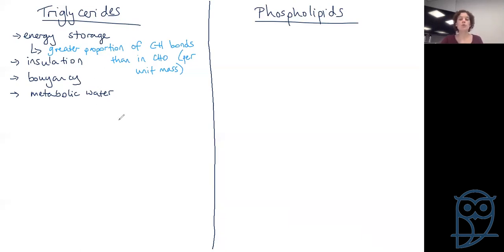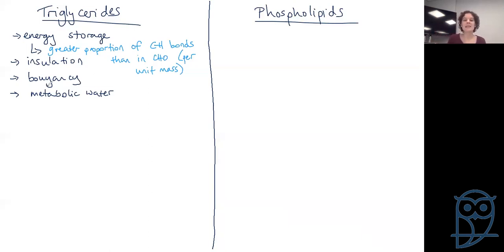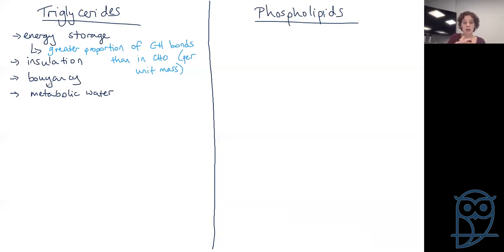Insulation, buoyancy, and metabolic water are all functions of triglycerides. For homeostasis and temperature control, insulation is important. Think about whales and blubber — that covers insulation and buoyancy together. Metabolic water is that lovely kangaroo rat that doesn't even need to drink because it gets enough water from the metabolism of triglycerides — which is just fantastic.